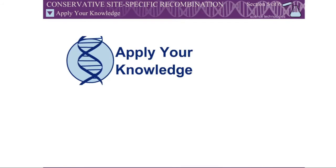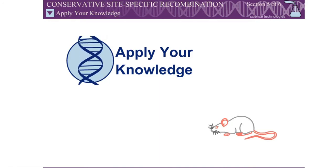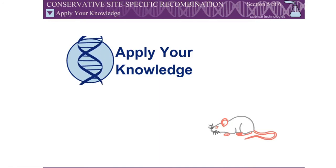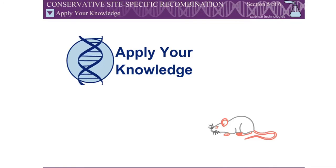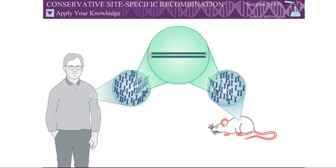Mice are often used for studying human diseases such as cancer. It is often useful to be able to knock out a specific gene within the mouse genome to study the effects of that gene in the development of a given disease. You have identified a gene found in the genomes of both humans and mice, and you believe that the protein product of this gene helps to prevent cancer in both mice and humans. How can you study the effects of this gene?